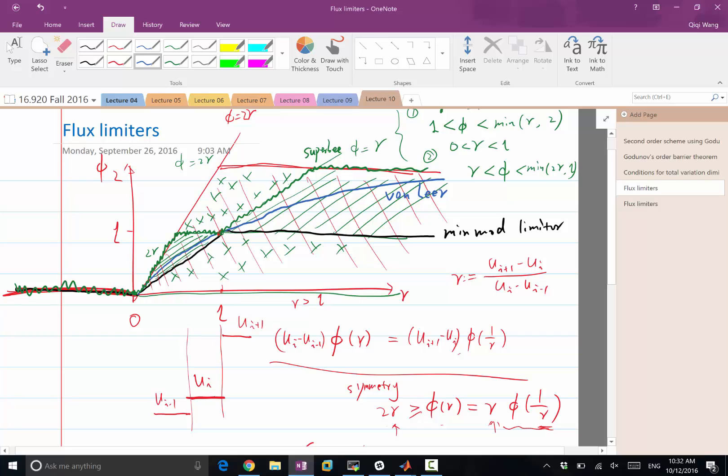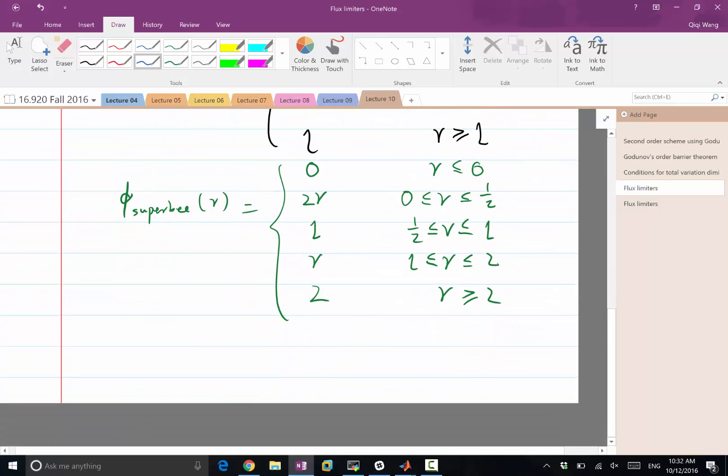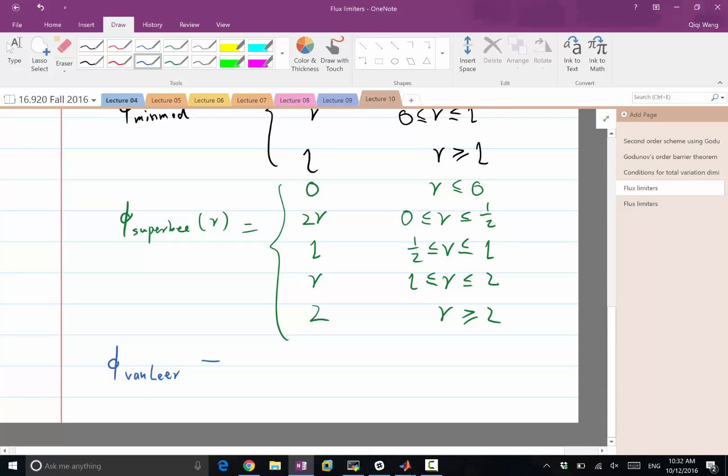Anyways, this type of, the first type of this limiter is constructed by Van Leer. And it's also, so this limiter is called the Van Leer limiter. It is only, it only has two pieces. Again, it is 0 when r is less or equal to 0. But when r is greater than or equal to 0, it has the same function. 2r divided by 1 plus r.